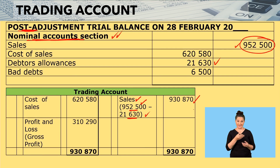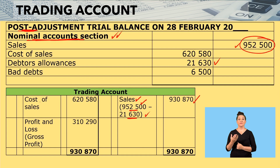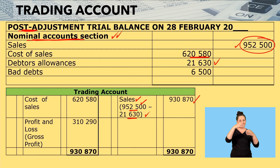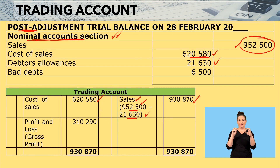On the debit side of your account you will have cost of sales. Remember we're in the nominal accounts section. Your cost of sales is given as 620,580. You come here, get your cost of sales 620,580, and subtract it.